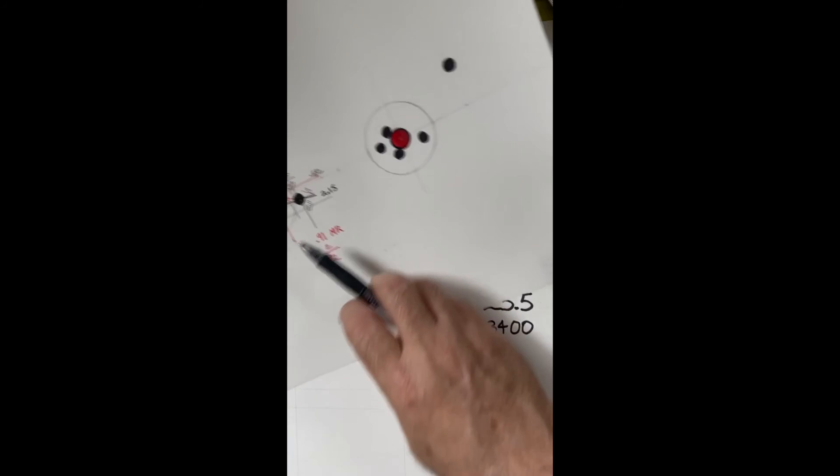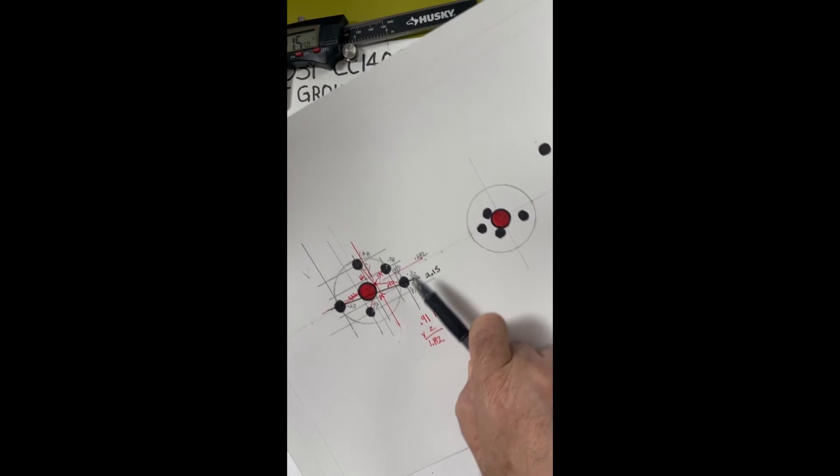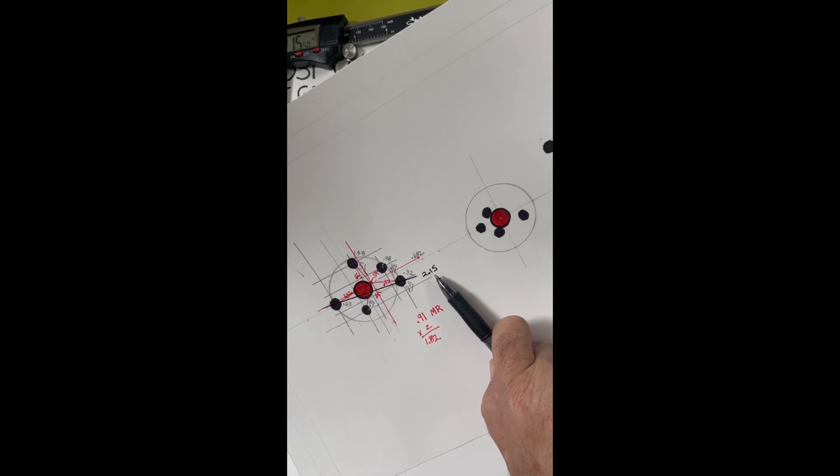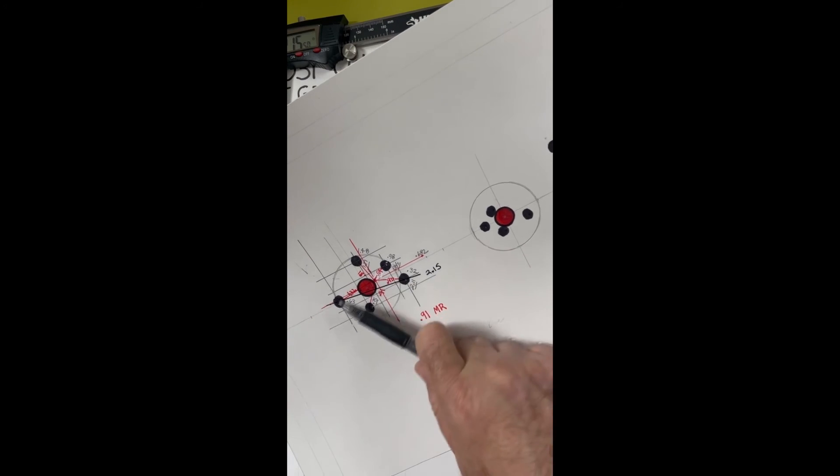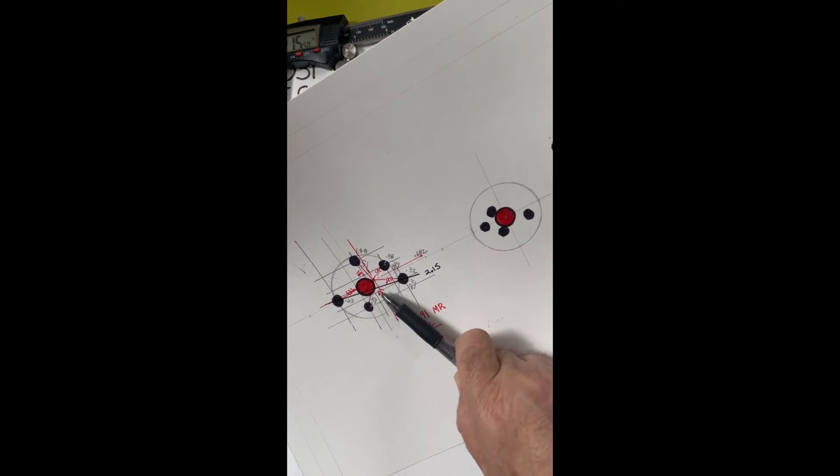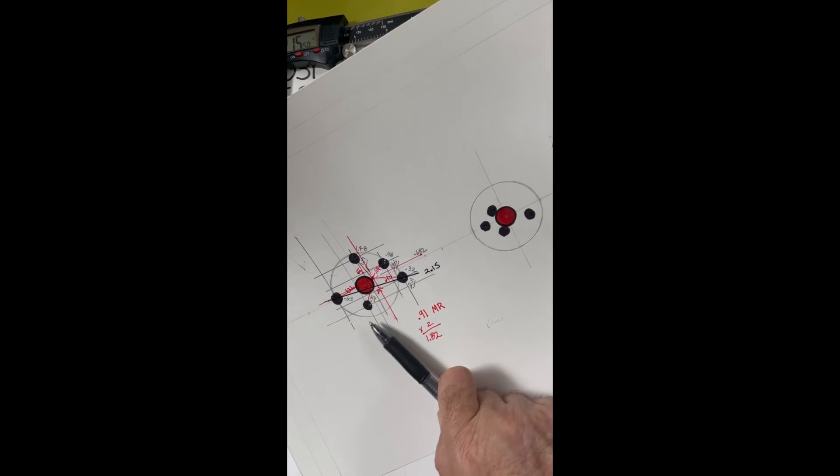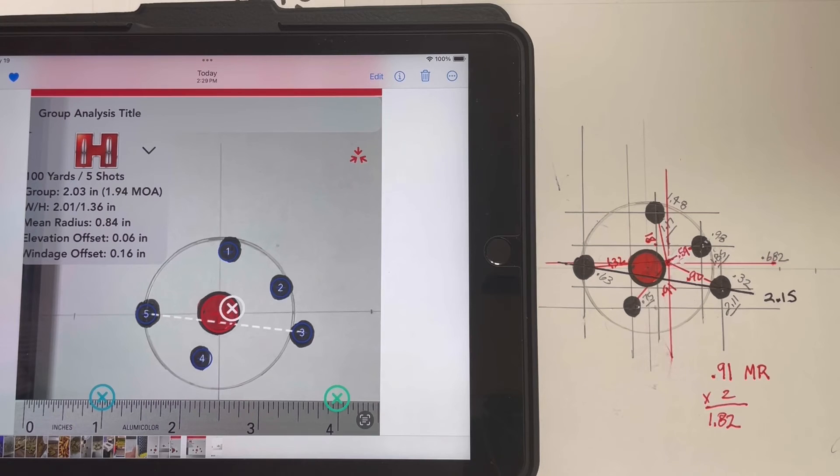So, even though your extreme spread is 2.15 inches, your mean radius is 0.91 inches, which means you're going to be pretty close to the center of that target when you're shooting most of the time.